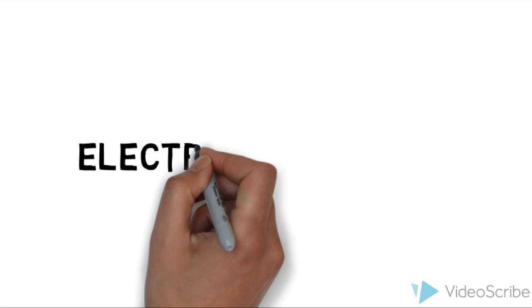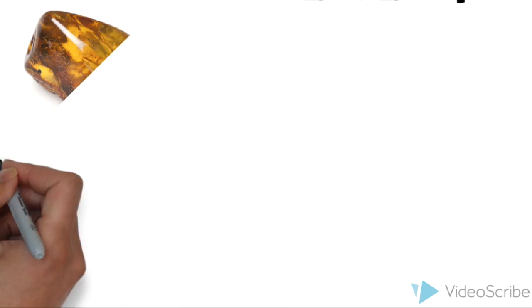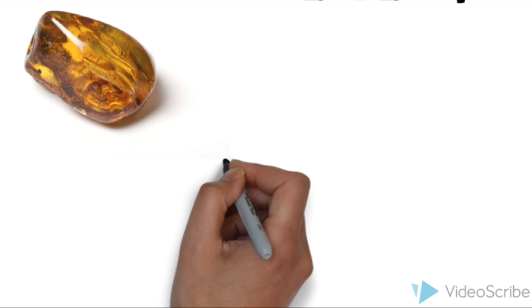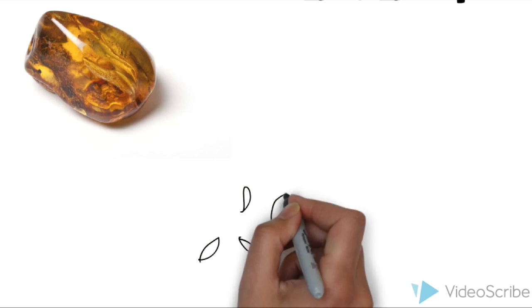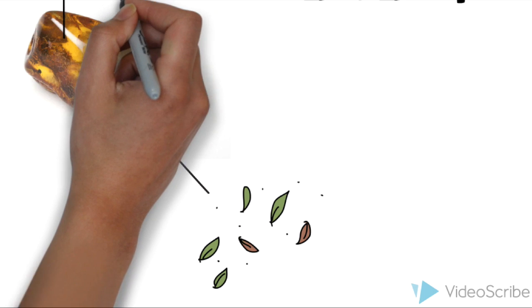Remember how I said like charges repel and opposites attract? Well that's because of the phenomenon we call the electrostatic force. Going back to amber and leaves, when you rub amber with something like cloth, amber likes to take away electrons and obtains a negative charge.